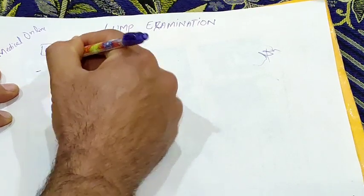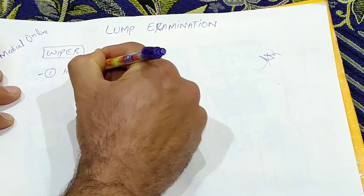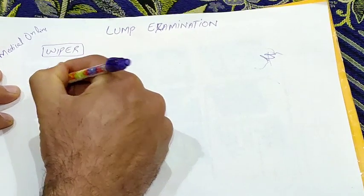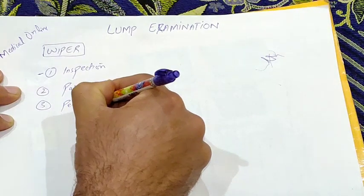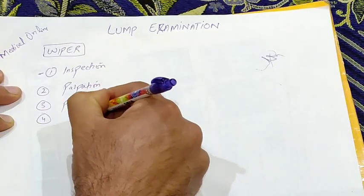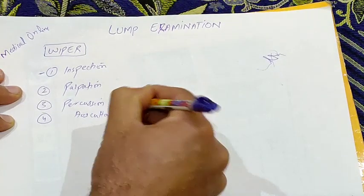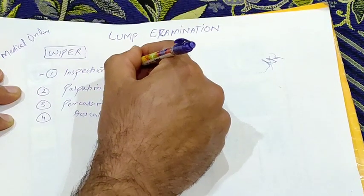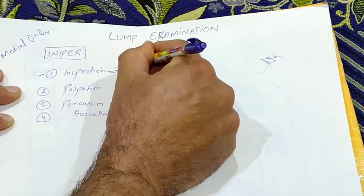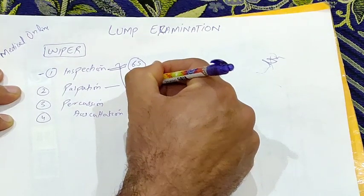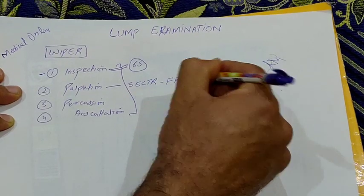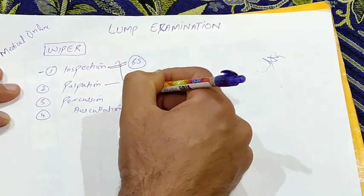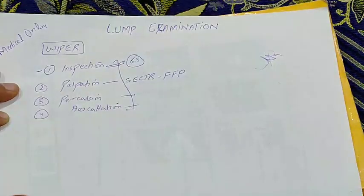In every examination we do four steps. Number one is inspection — for inspection of a lump, remember the mnemonic of six S's. For palpation, remember the mnemonic SECTOR FFP. Percussion is the third step, and auscultation with a stethoscope is the fourth.